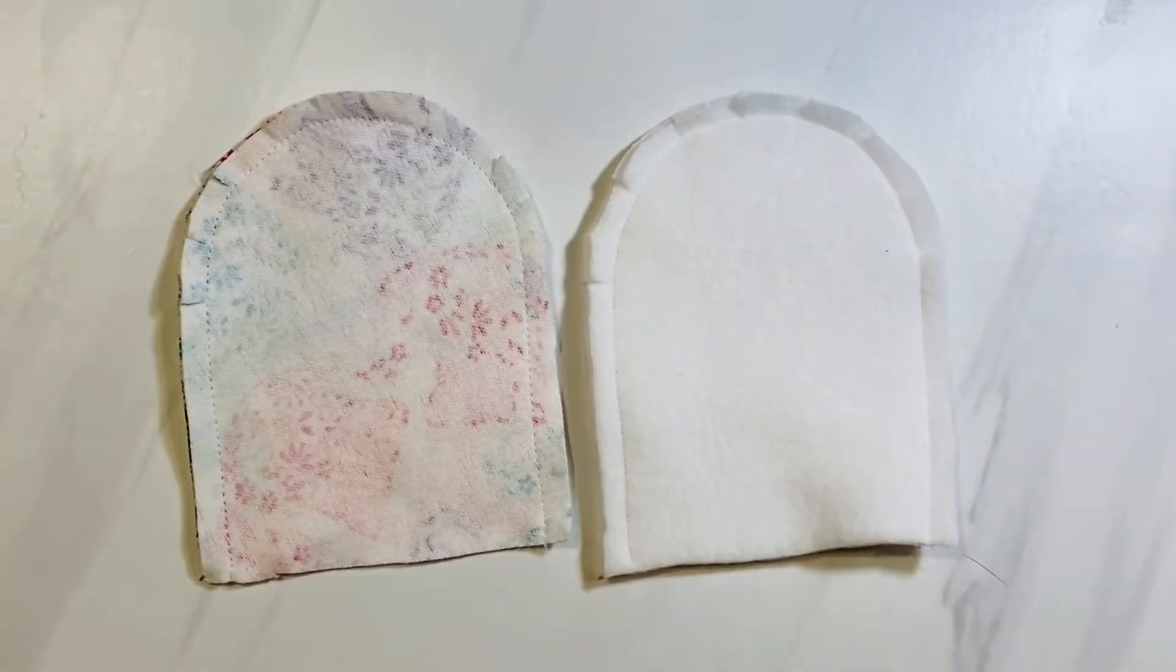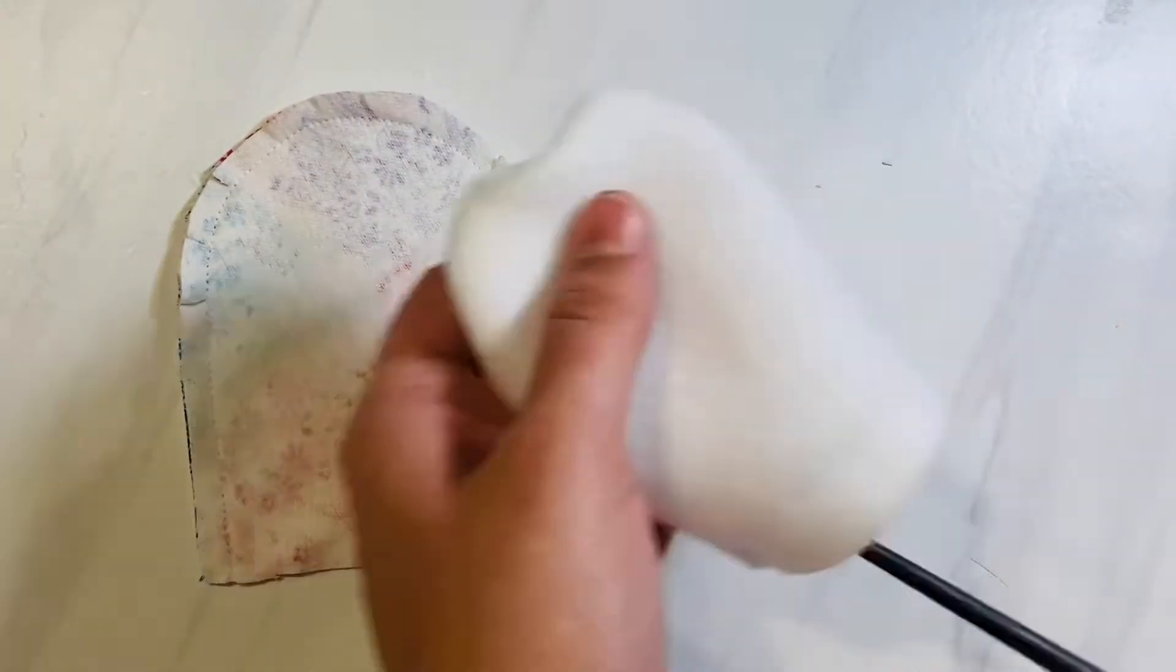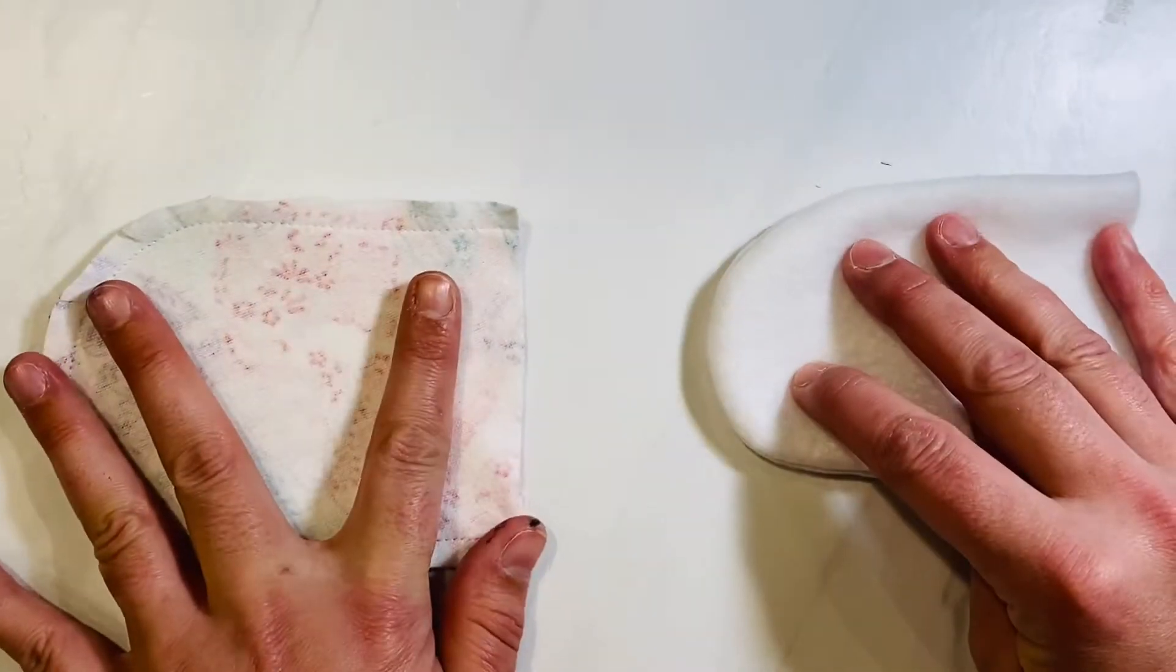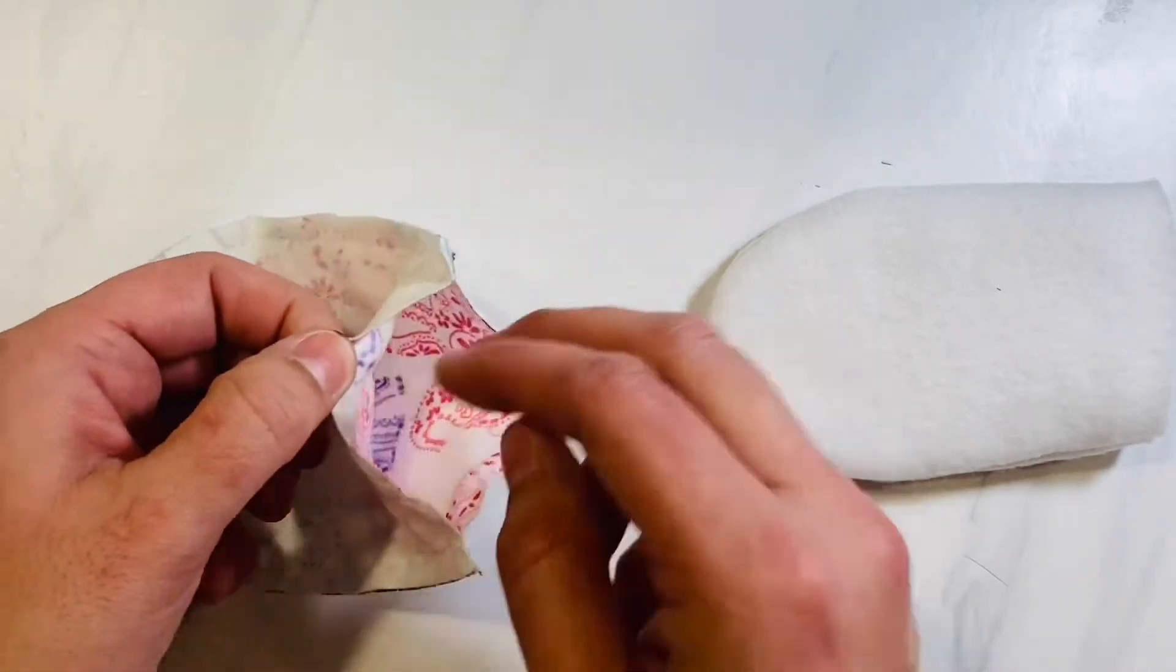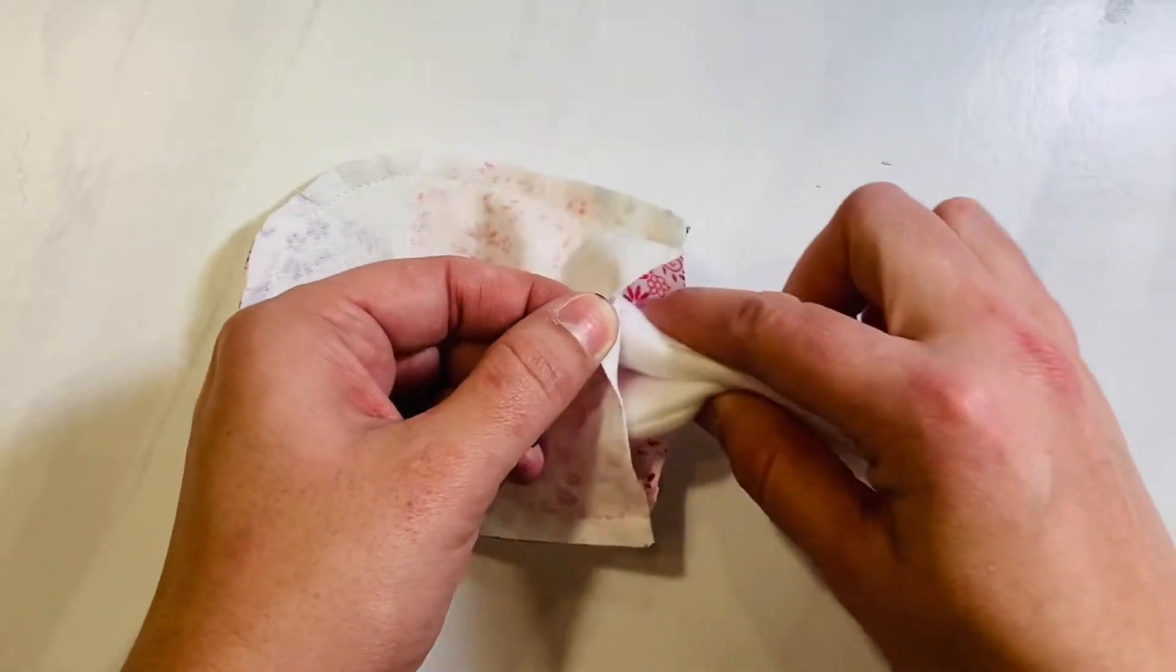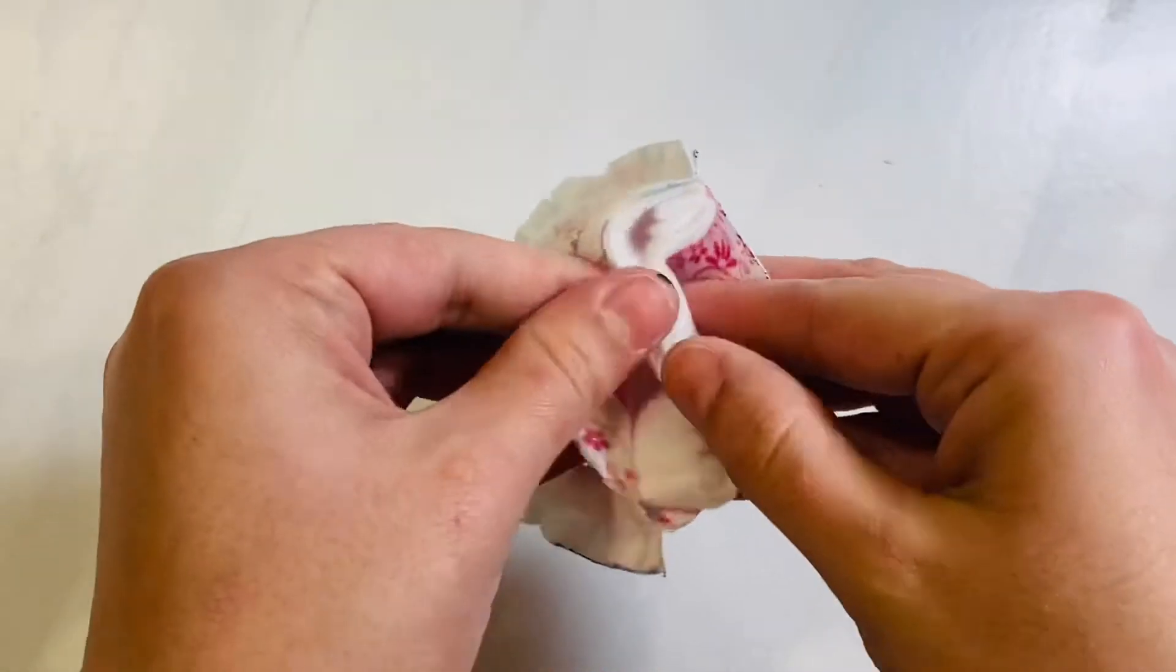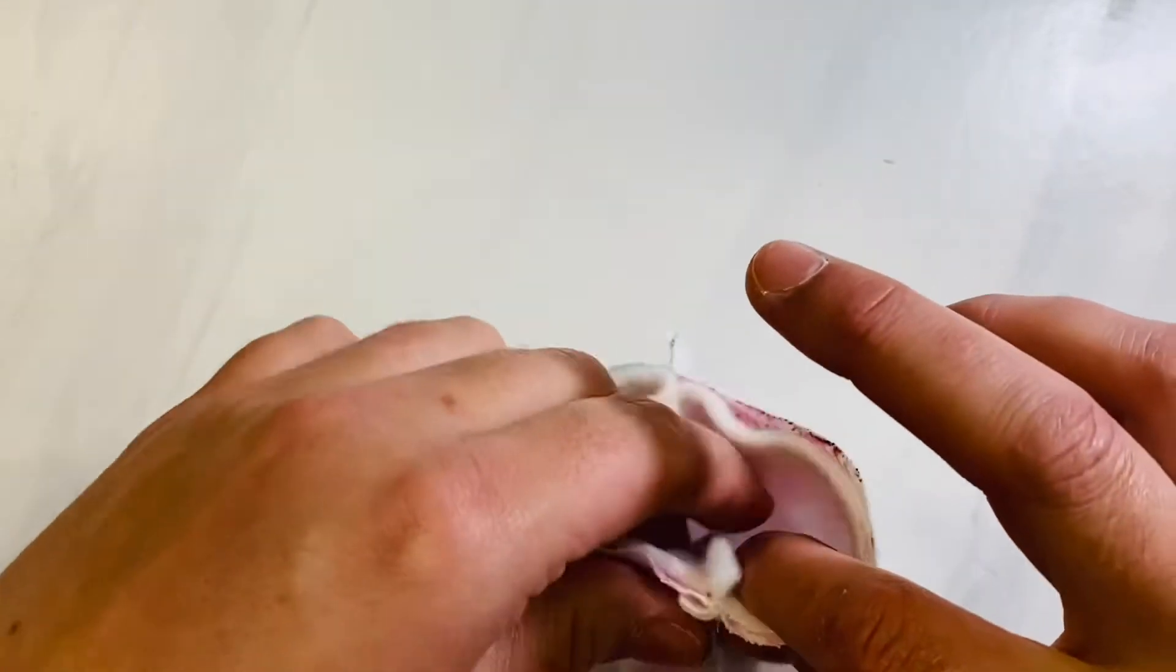Once your notches are completed, go ahead and get your lining piece and flip it right side out. I like to use a chopstick to smooth out my seams and make sure they're poked out. So now you're going to get your lining piece and put it inside of your outer mitten piece that is still not flipped right side out. And you're going to line them up so that your side seams match up. Open it up once it's tucked in there and line up your side seams.